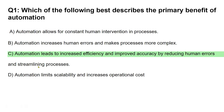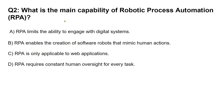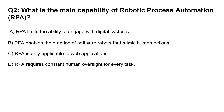Let's go to the second question: What is the main capability of Robotic Process Automation, or RPA? Here are your options: A) RPA limits the ability to engage with digital systems. B) RPA enables the creation of software robots that mimic human actions. C) RPA is only applicable to web applications. D) RPA requires constant human oversight for every task. Which one do you think is the right answer?